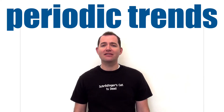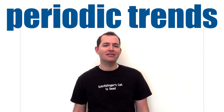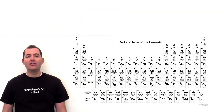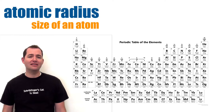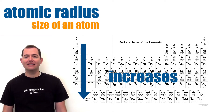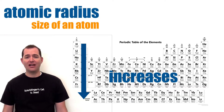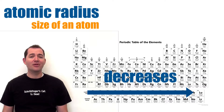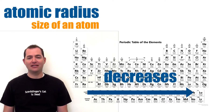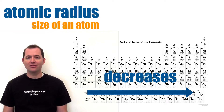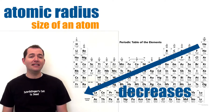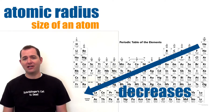This leads us to the important idea of periodic trends — patterns in the characteristics of elements based on their location on the periodic table. First is atomic radius, or the size of an atom. Atomic radius increases as we move down the periodic table because we are adding extra shells of electrons, and decreases as we move to the right because elements have more protons, making electrons feel a greater attraction toward the nucleus. Overall, atomic radius decreases as we move down and to the left.